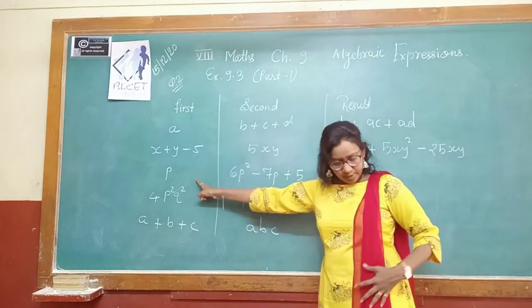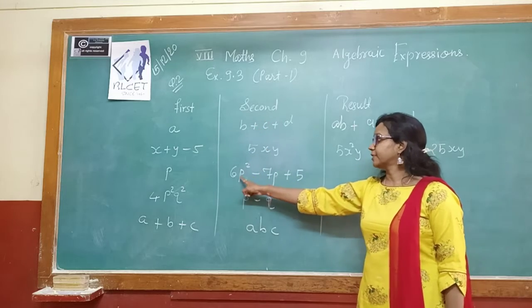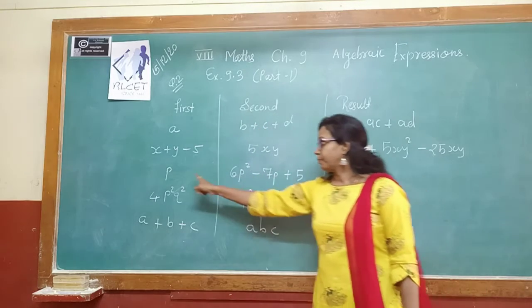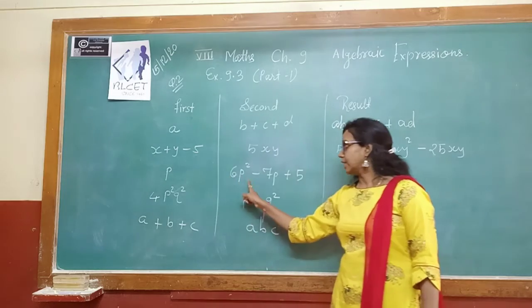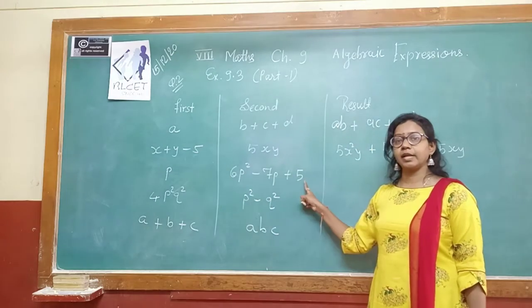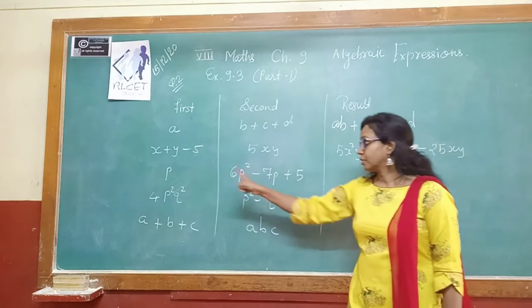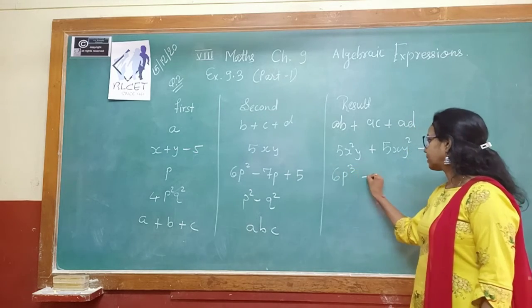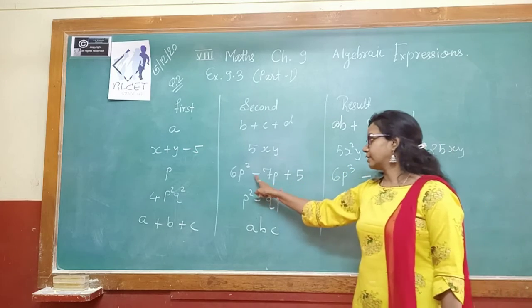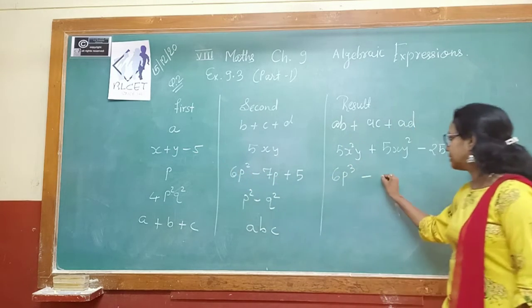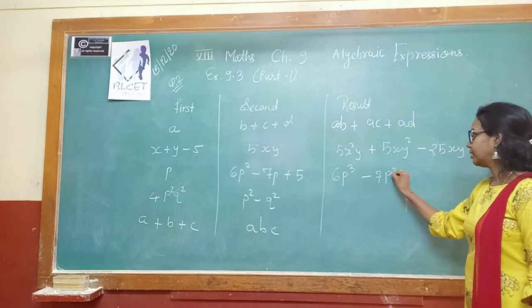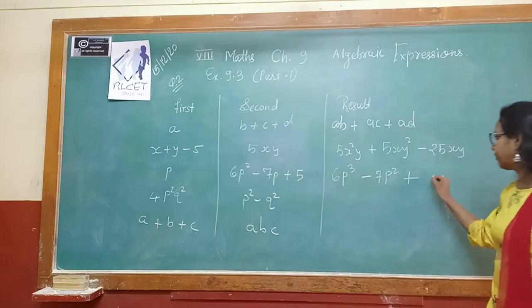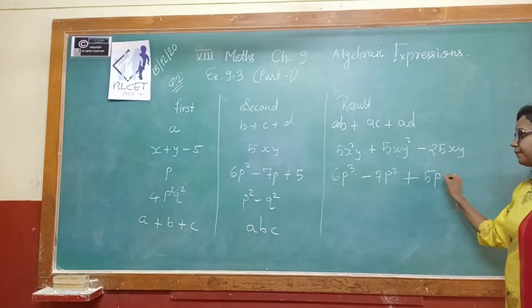Next, the first expression is p and the second is 6p² − 7p + 5. So p will multiply with each and every term of this algebraic expression. p × 6p² gives 6p³, minus 7p × p gives 7p², plus 5 × p gives 5p. So the answer is 6p³ − 7p² + 5p.